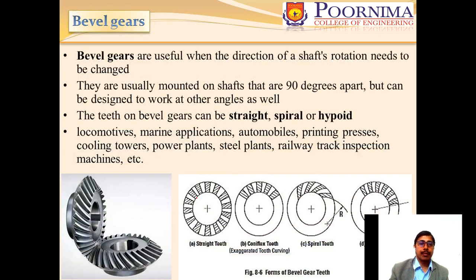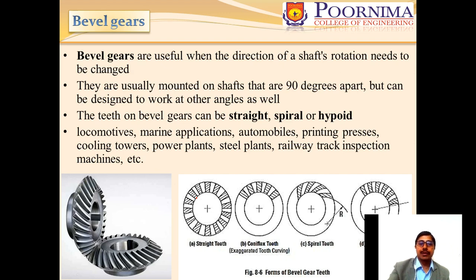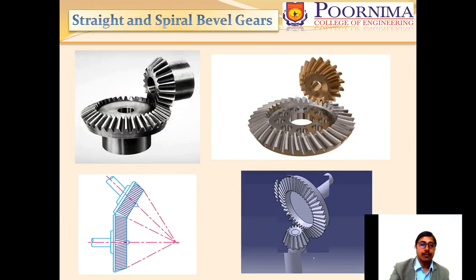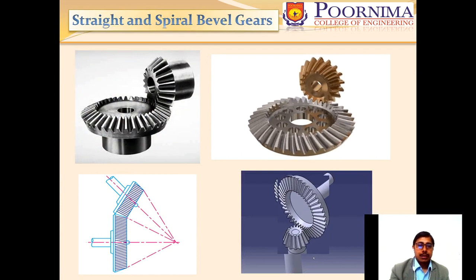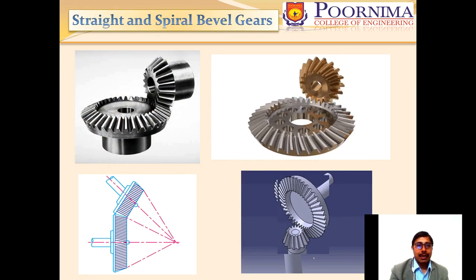The bevel gear is generally used to mount shafts that are 90 degrees apart, but can be designed to work at other angles as well. The teeth on bevel gears can be straight, spiral, or hypoid. Applications include locomotives, marine applications, automobiles, and printing presses. You can also see an animation of how the bevel gear works.